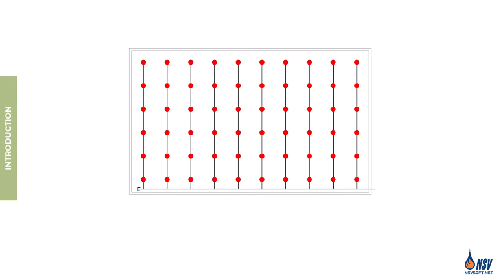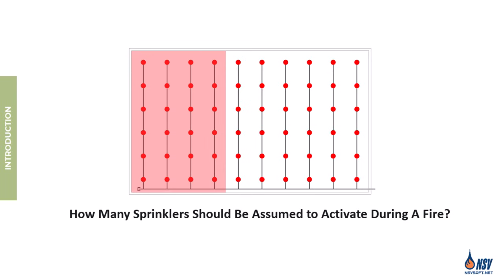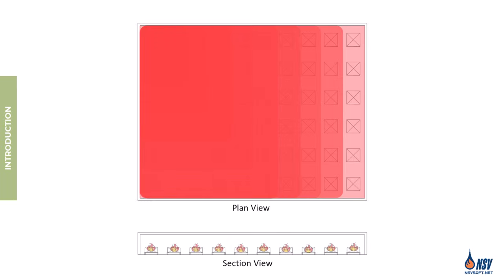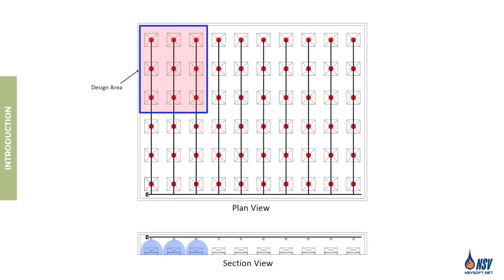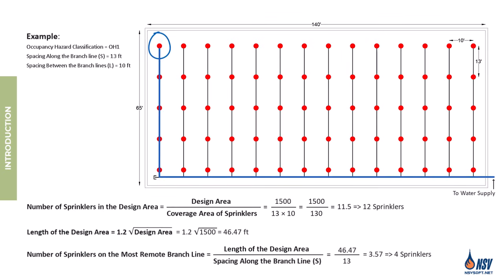In hydraulic calculations for fire sprinkler systems, one of the most critical questions is how many sprinklers should be assumed to activate during a fire. This assumption directly affects pipe sizing, required flow rate, and pressure distribution throughout the system. In this video, we'll walk through the basic concepts of selecting and laying out the design area using the density-area method, which applies to standard spray, extended coverage, and CMDA sprinklers.